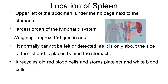The spleen is placed in the upper left part of the abdomen, below the rib cage and next to the stomach. The spleen is the largest organ of the lymphatic system and it weighs around 150 grams in an adult. The main function of the spleen is to recycle the old RBCs and store the platelets and WBCs in the spleen.